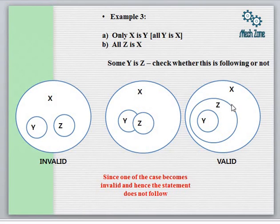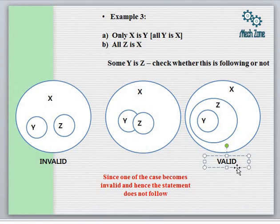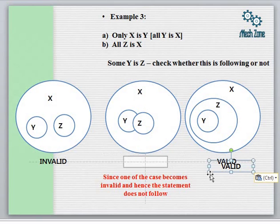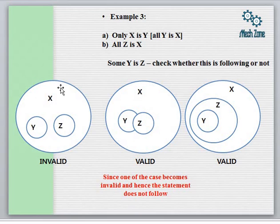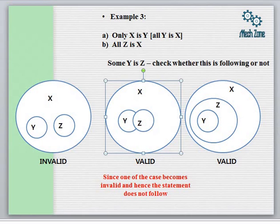However, since the first case is valid for the statements but makes the conclusion invalid, we can say that Some Y is Z is not necessarily following. Two cases are valid for the statements but in one of those the conclusion is invalid, and hence the entire situation becomes invalid. So our conclusion does not follow.